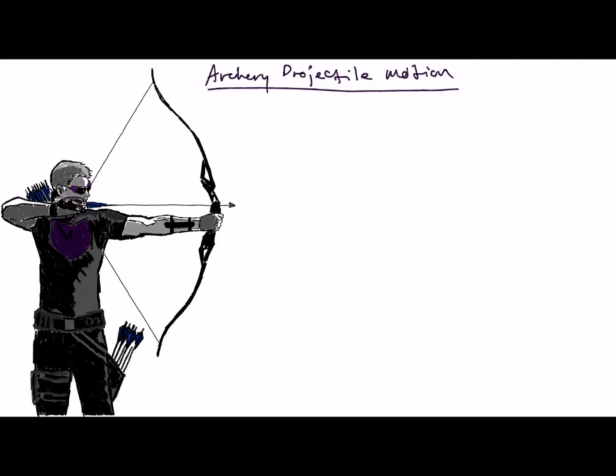Today we're going to apply projectile motion to archery. In this situation, we have a bow that can shoot an arrow at 300 feet per second, aiming at a target 150 feet away.